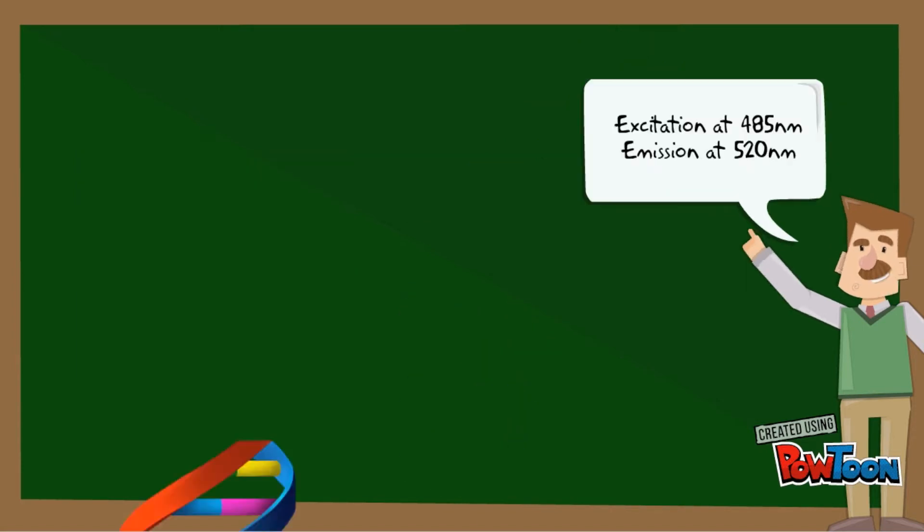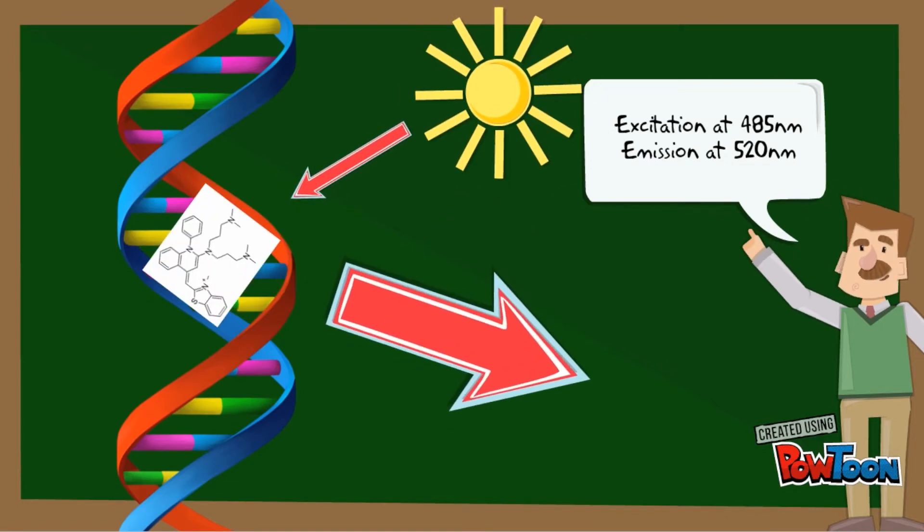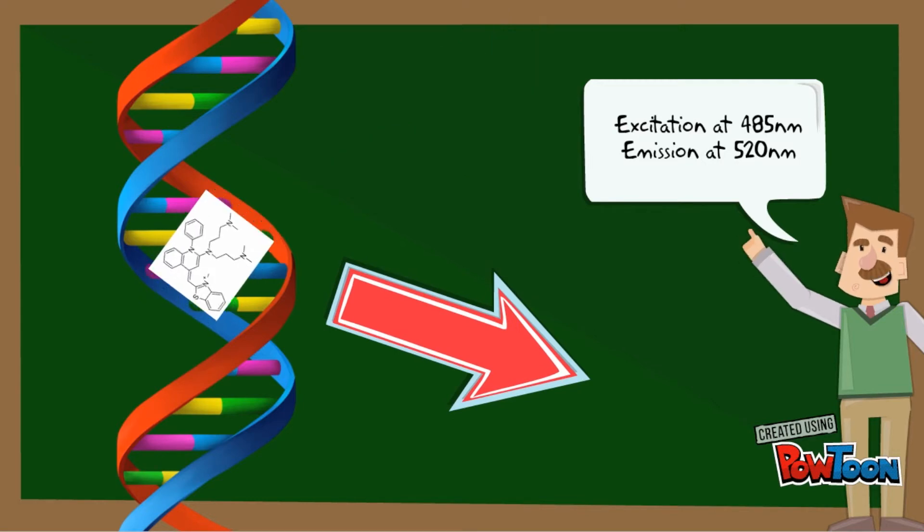There's the vibrations, Jimmy. When pico green binds to double-stranded DNA, the vibrations are stabilised and energy output occurs via emission. The energy is emitted at 520 nm with an intensity thousands of times brighter than the free-floating pico green molecule.